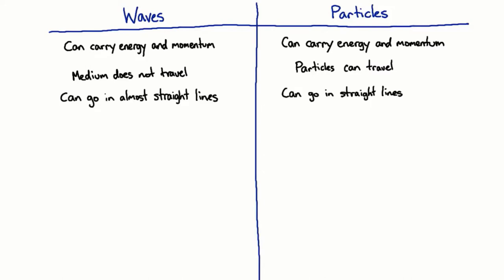So particles exist in a particular place and they also have a particular velocity. Whereas waves are spread out. A water wave can be anywhere on the entire surface of the water, and indeed all over the surface of the water. And it can be going not just in one direction but a different direction, and different parts of the wave can be going at different speeds.